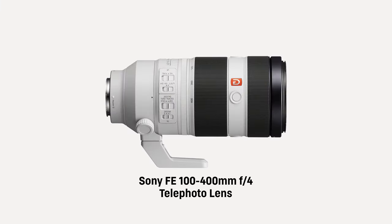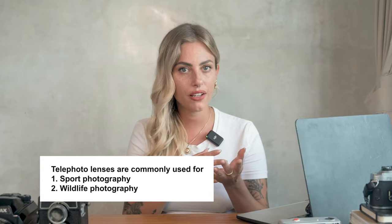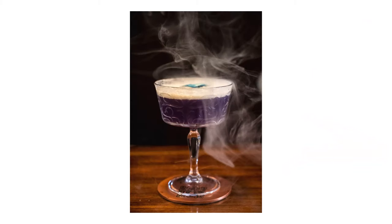Telephoto lenses have a longer focal length, typically ranging from 70mm and above — it can literally go all the way to 400mm and beyond. They provide a narrow angle of view, allowing you to magnify distant subjects and bring them closer. Telephoto lenses are commonly used in sports photography, wildlife photography, and situations where you need to capture details from afar. They also help in creating a compressed background, separating the subject from the background, and creating an isolating effect — like hiding in the bush capturing tigers in the jungle, or trying to get a photo of your favorite celebrity.